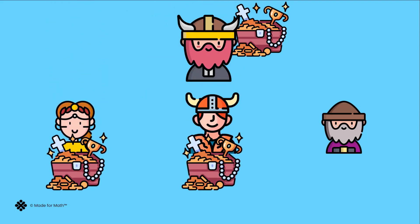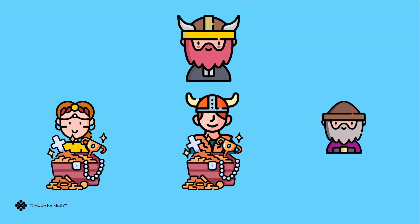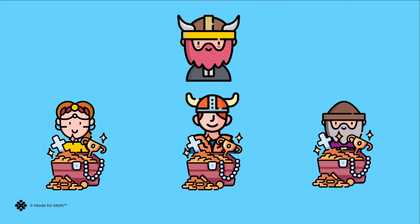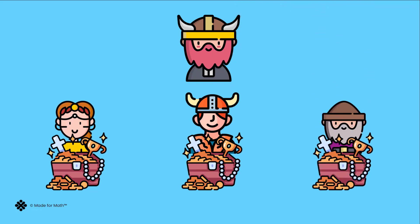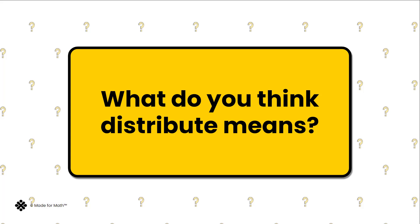Each tribe individually would receive their pay. A tribe is a group. The Viking leader gave to the groups equally. What do you think distribute means?